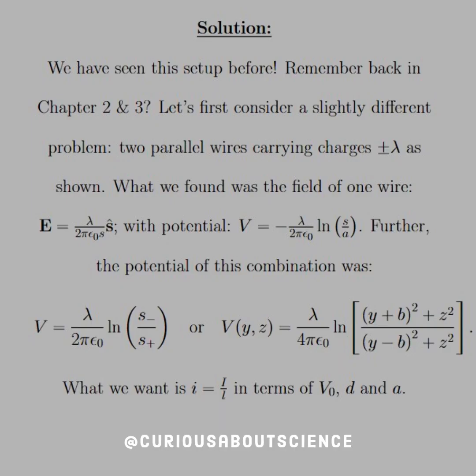And what we found with this setup was that E was equal to lambda over 2 pi epsilon naught S in the S hat direction with potential negative lambda over 2 pi epsilon naught, the natural log S over A. Pretty standard stuff. We've seen it before. And then further, what we saw was that the potential at some point for both of the wires was S minus over S plus, which was a minus wire and positive charge wire.